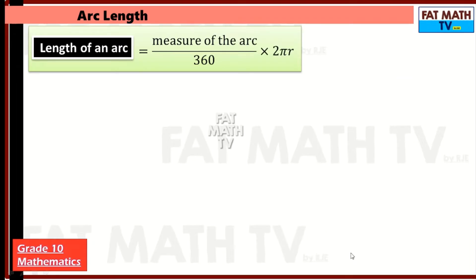The length of an arc of a circle is equal to the measure of the arc over 360 times 2πr. This formula first identifies the fraction of the circle's circumference, then multiplies by the circumference of the circle. So 2πr is the formula for the circumference, and the arc length is proportional to the fraction of the arc measure to 360.